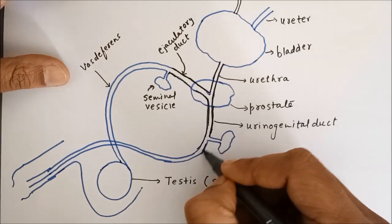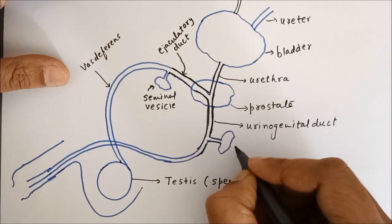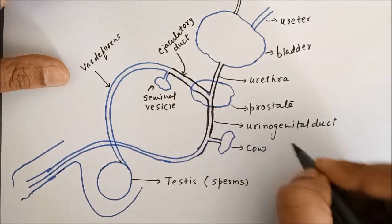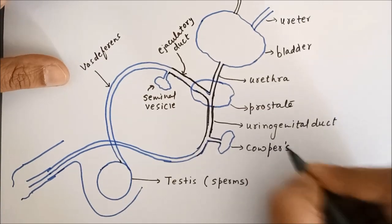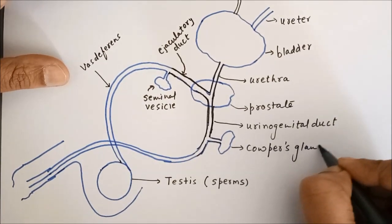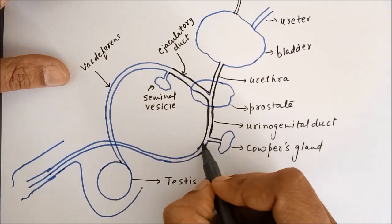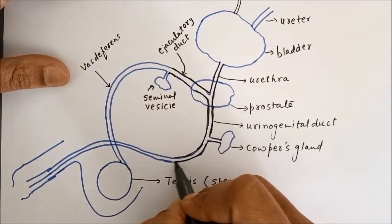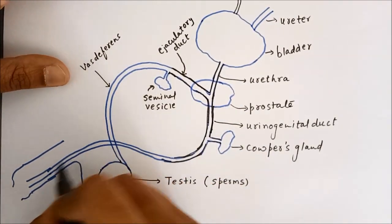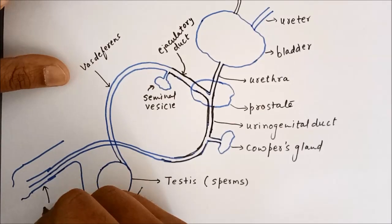Then this is Cooper's gland. Then finally, this urinogenital tract goes in a muscular organ called penis.